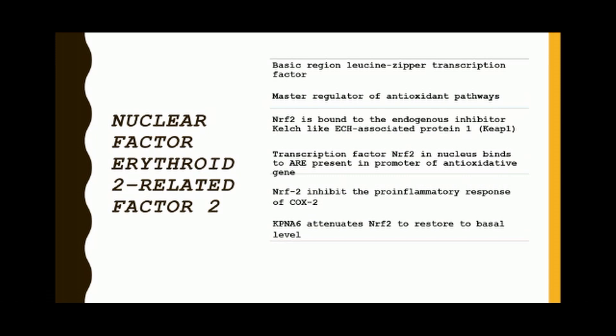NRF2 inhibits the pro-inflammatory response of COX2 as well as KPNAS6, which attenuates NRF2 to restore it to basal levels. When ROS reacts with redox-reactive cysteine residues in KEAP1, NRF2 is released from KEAP1, allowing the transcription factor NRF2 to translocate to the nucleus. In the nucleus, NRF2 dimerizes with a basic leucine zipper partner, such as small MAF family proteins.